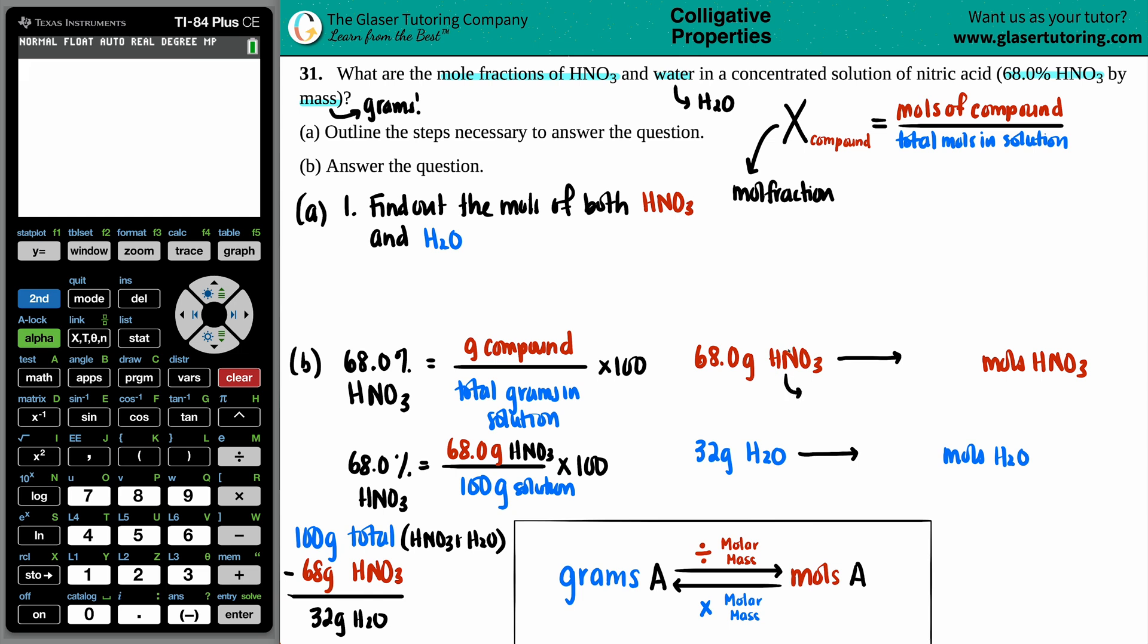So I have to find out what the molar mass is of HNO3. On the periodic table, I have one H, so that's 1.008, plus one nitrogen, which is 14.01, plus three oxygens, which is 16. So 1.008, plus 14.01, plus three times 16.